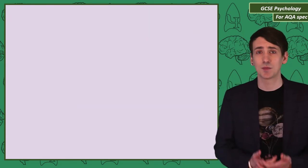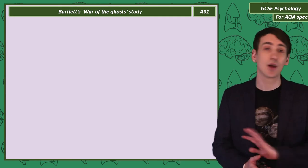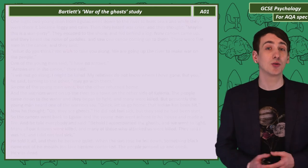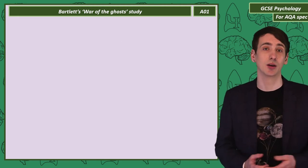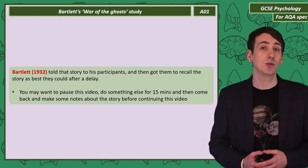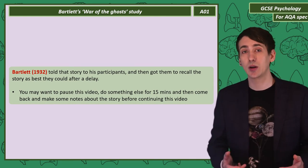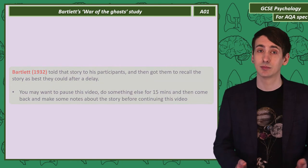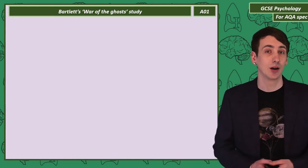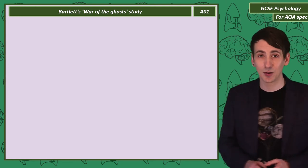Before I set up the content of this video I've got a story to tell you. What I'd like you to do when I reveal it is to pause the video and read the whole story. That story was originally used by a psychologist called Bartlett back in 1932. He told the story to his participants and then got them to recall it back to him. It will be best if you wait 15 minutes — pause the video, get a drink, and then come back. When you're back, take some bullet point notes about what you remember from the story.